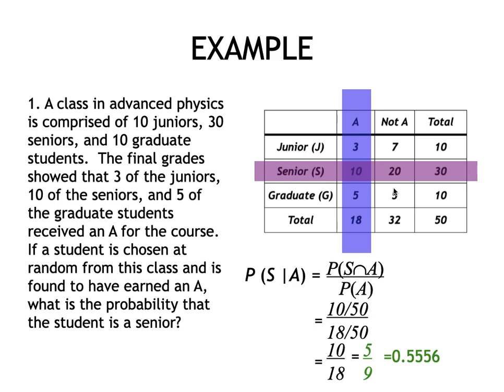Using the intuitive approach: of those who got an A, which is 18, there were 10 seniors. So you end up with 10 over 18, which is exactly 5/9, equivalent to 0.5556.